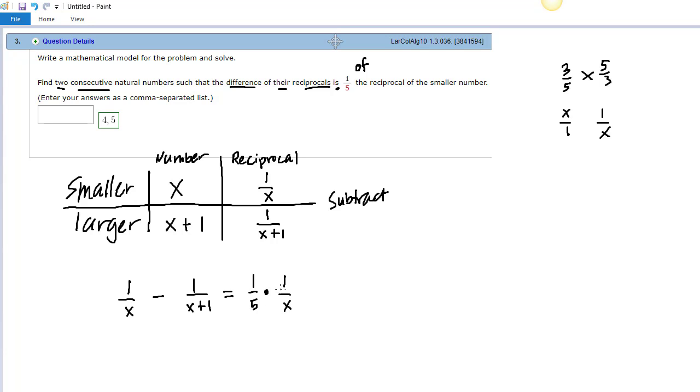Now we can take 1 fifth times 1 over x and call that 1 over 5x. We just multiply 1 times 1 and get 1, 5 times x and get 5x. So now we need to go solve this problem.